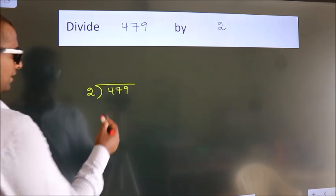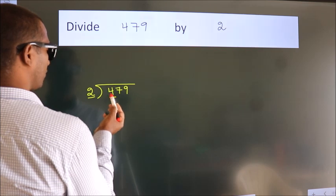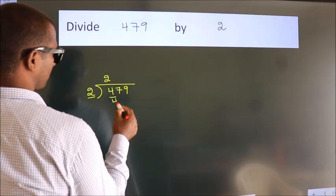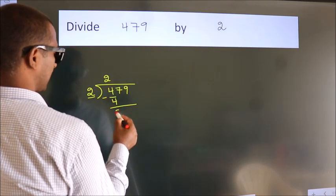Next, here we have 4, here 2. When do we get 4 in the 2 table? 2 times 2 is 4. Now we should subtract. We get 0.